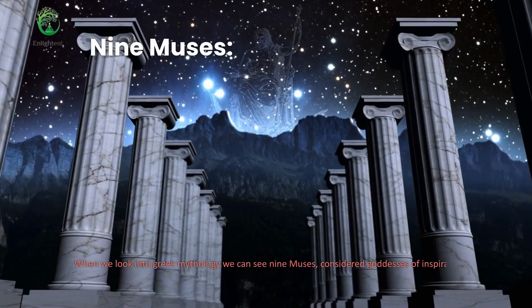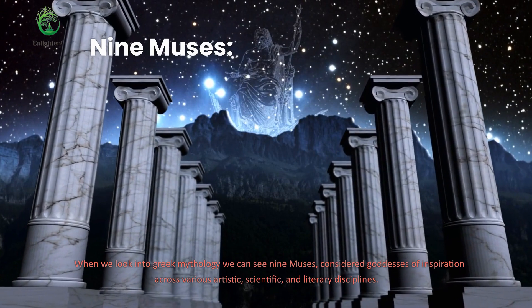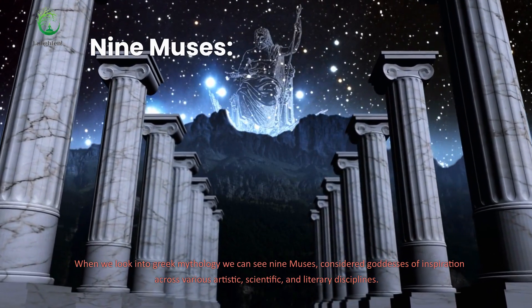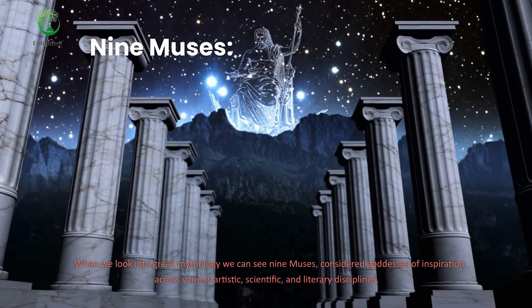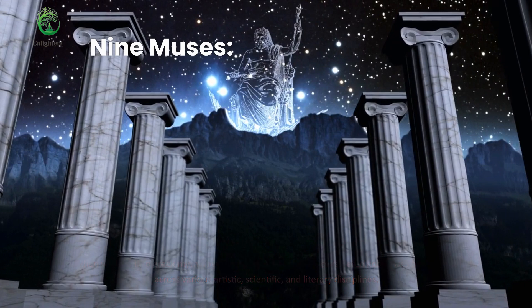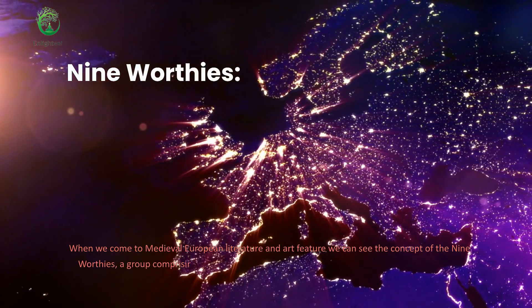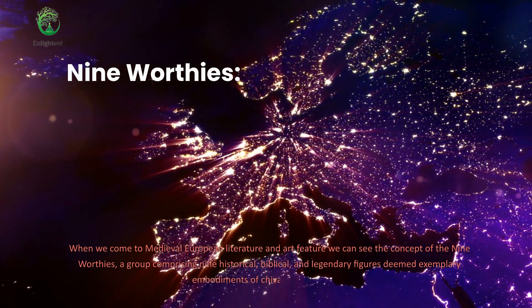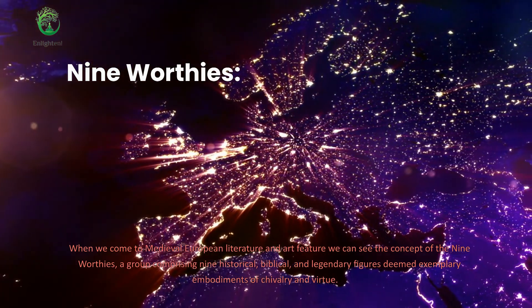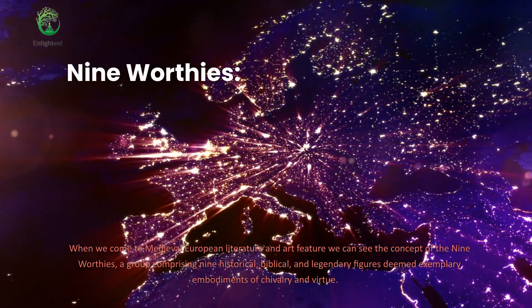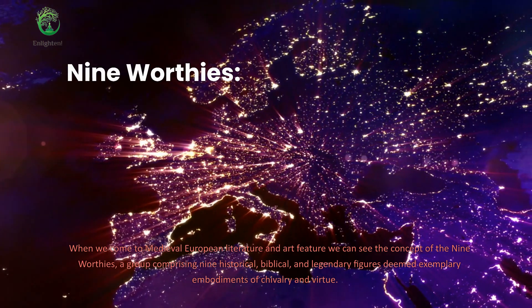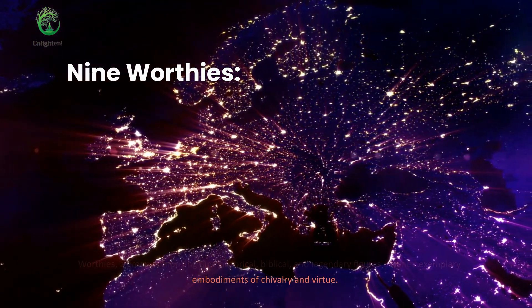When we look into Greek mythology we can see nine muses, considered goddesses of inspiration across various artistic, scientific, and literary disciplines. These muses were thought to bestow creativity and knowledge upon individuals. When we come to medieval European literature and art, we can see the concept of the Nine Worthies, a group comprising nine historical, biblical, and legendary figures deemed exemplary embodiments of chivalry and virtue.